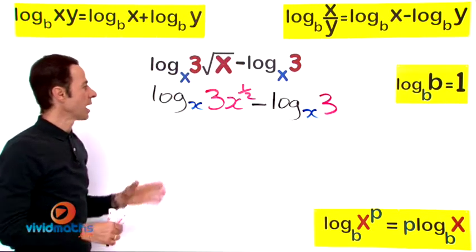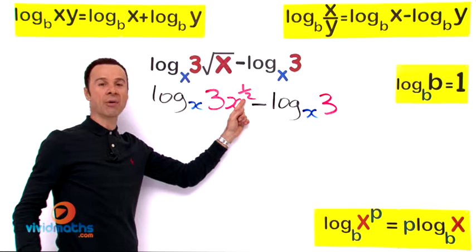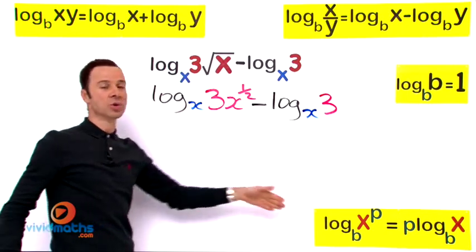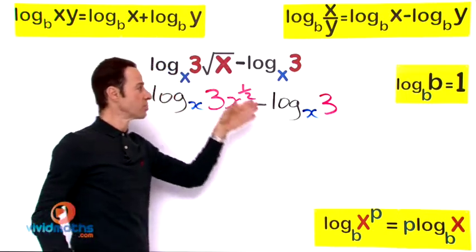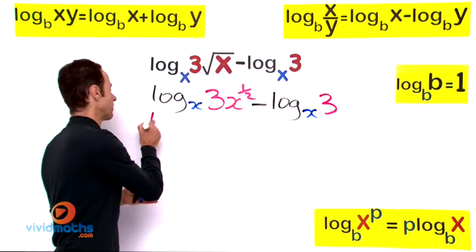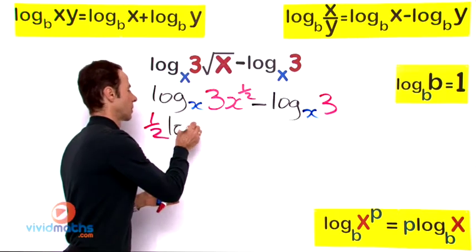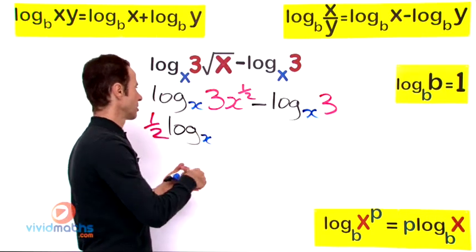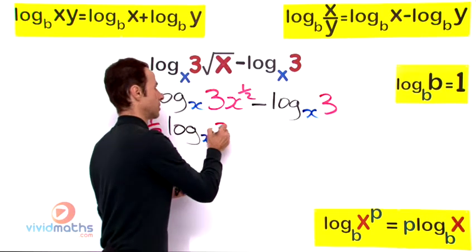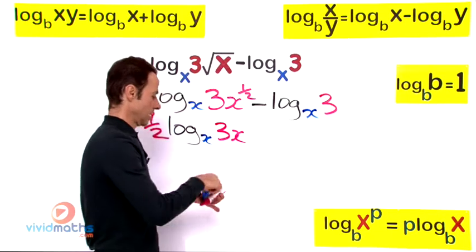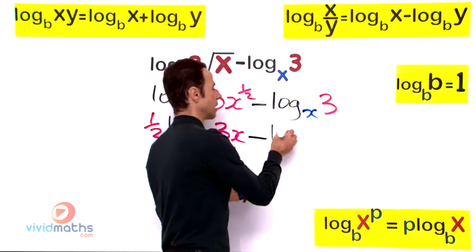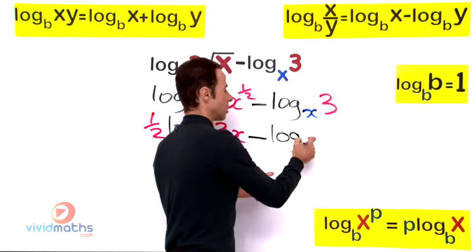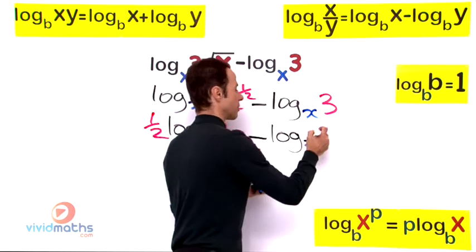Now that we have it written out like that, we have that power up there. We can bring it to the front using the log law down there, so that will be 1/2 log x of 3x, and let us subtract log base x of 3.